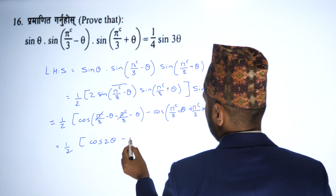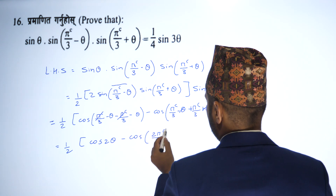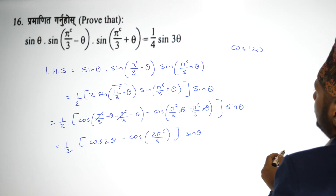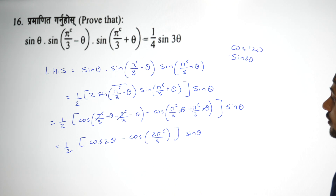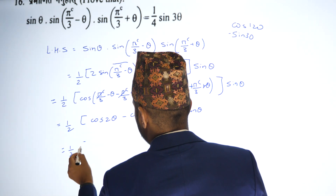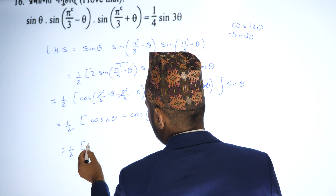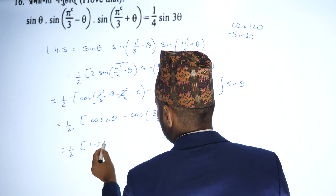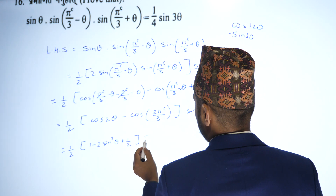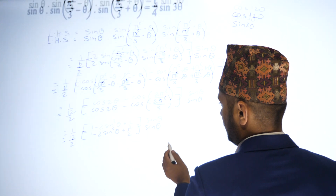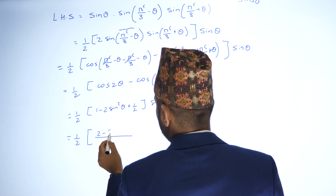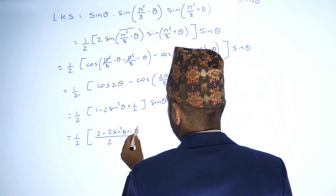Then minus cos(2 pi by 3), which is cos 120 degrees, equals minus sin 30. After simplification with plus and minus signs, the answer is 1 by 2 times sin theta.